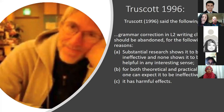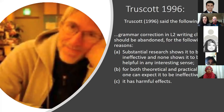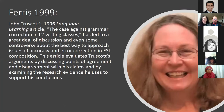John Trascott said: grammar correction in second language writing classes should be abandoned because substantial research shows it to be ineffective and shows no evidence of it being helpful; for both theoretical and practical reasons one can expect it to be ineffective; and it has harmful effects. Trascott's argument was surprising. Then Dana Ferris responded at conferences and academic seminars over the following year and in 1999 published counter-arguments to Trascott's article, which stirred up further debate.